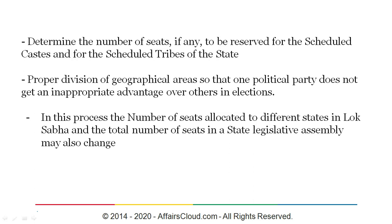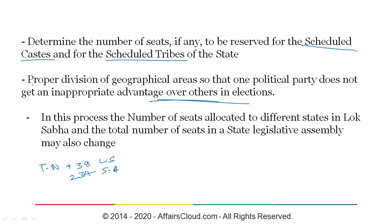Another objective is to determine the number of seats to be reserved for the scheduled castes and scheduled tribes of the state — delimitation enumerates their population and decides whether to increase, decrease or maintain the number of reserved constituencies for these communities. Also, delimitation attempts to properly divide geographical areas so that a political party does not get an unfair advantage over others in elections. The number of seats allocated to different states in the Lok Sabha and the total number of seats in a legislative assembly may also change. For example, Tamil Nadu currently has 39 constituencies in Lok Sabha and 234 in the state assembly, and these numbers may change if a delimitation commission is implemented.